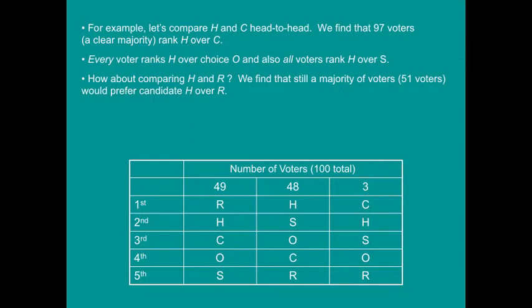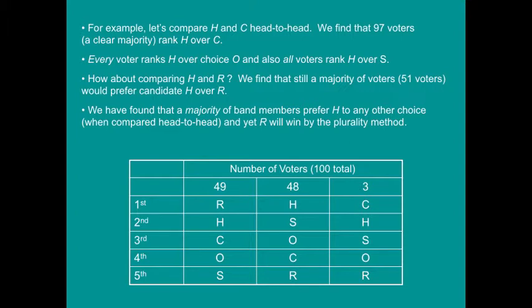Finally, comparing H and R: a majority of 51 voters prefer H over R. The 48 plus 3 voters have H ranked much higher — in fact, they have R last. Only the 49 voters who put R first actually rank R before H. So it's 49 versus 51 — H still wins against R one-on-one, 51 to 49. H wins one-on-one against every other choice, beating each by a majority. And yet R would still win by the plurality method.